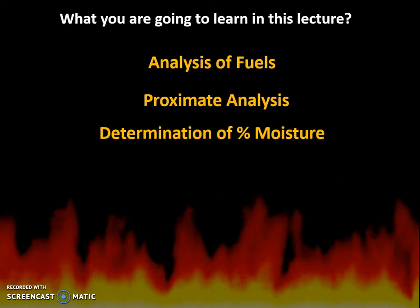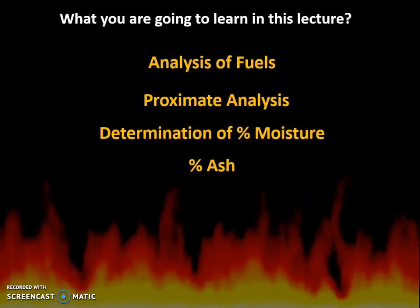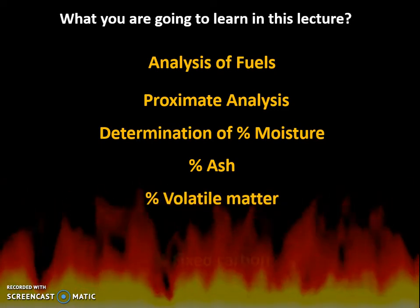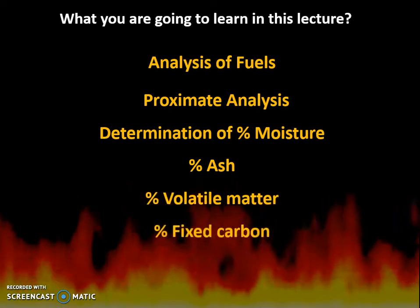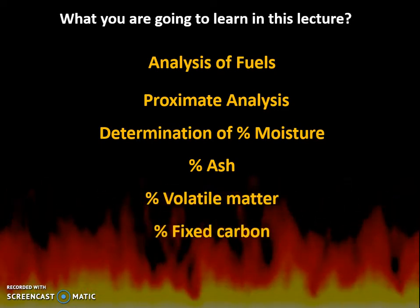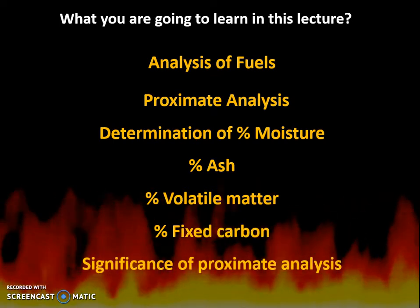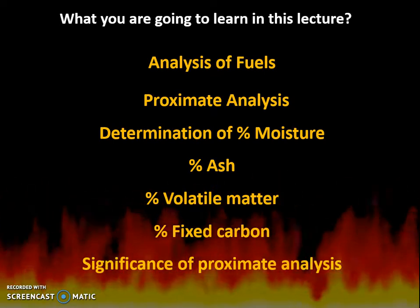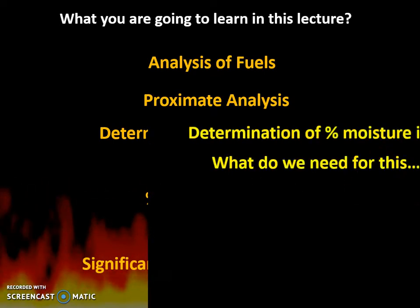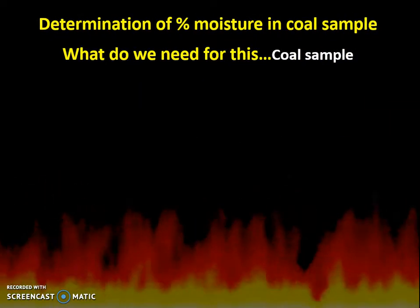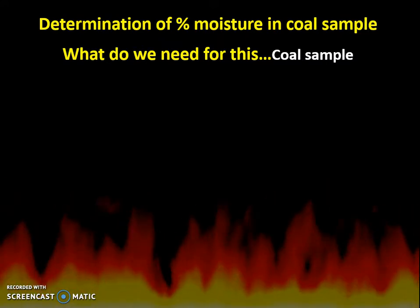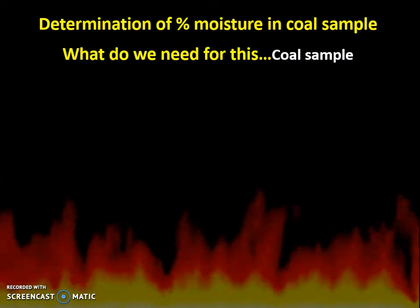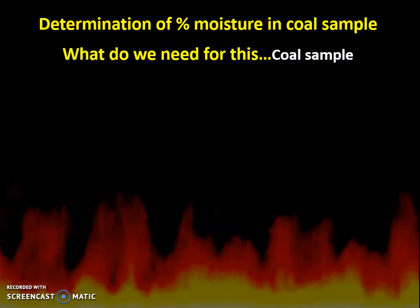The proximate analysis covers: determination of percentage moisture, percentage ash, percentage volatile matter, percentage fixed carbon, and at the last, the significance of proximate analysis. Let us see one by one — starting with determination of percentage moisture in a given coal sample.